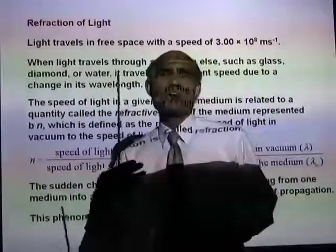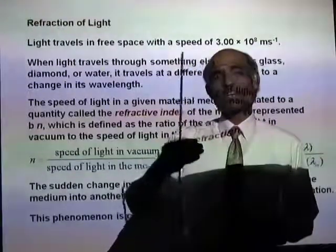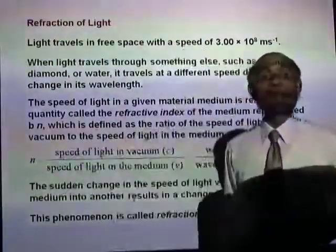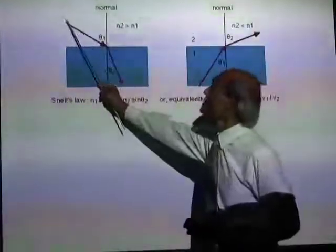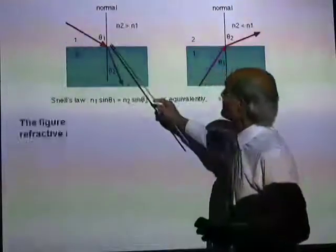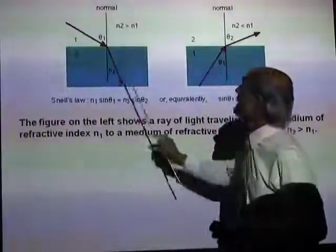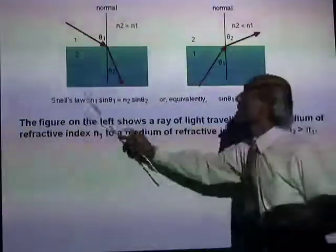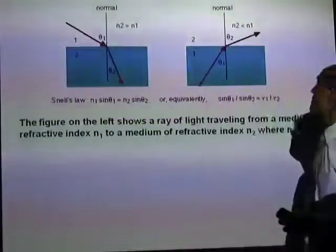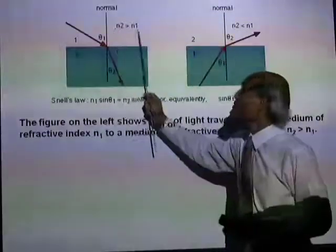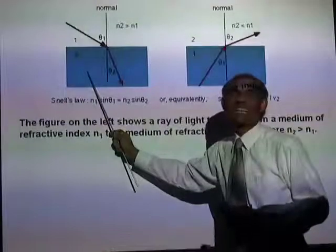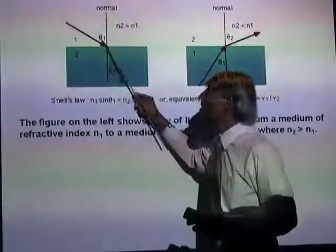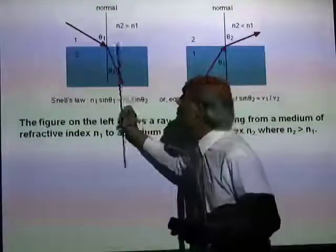If I ask you what is the phenomenon of refraction, you should be able to tell me that refraction is the phenomenon of bending of light while passing from one medium into another due to a change in speed. The figure on the left shows a ray of light traveling from a medium of refractive index N1 to a medium of refractive index N2, where N2 is greater than N1. We say medium 2 is a denser medium. When light travels from a less dense medium to a more dense medium, it bends towards the normal.